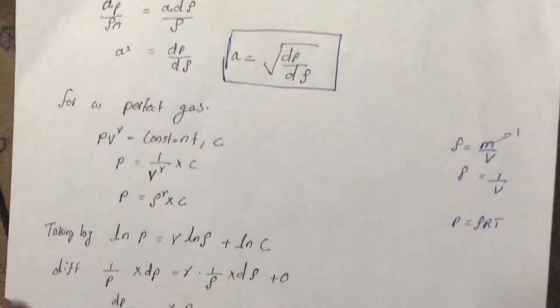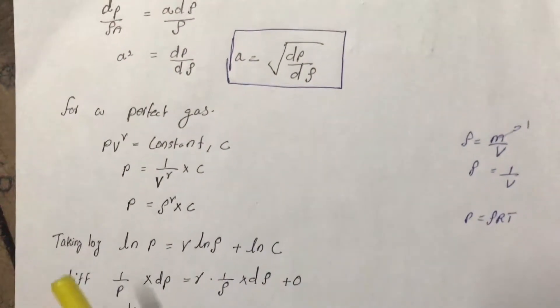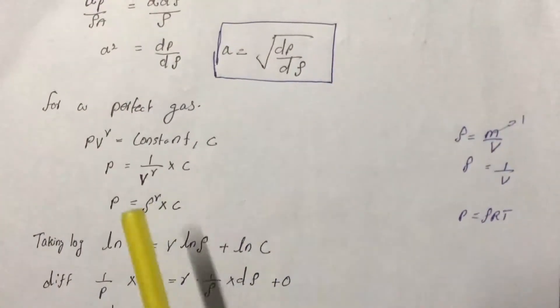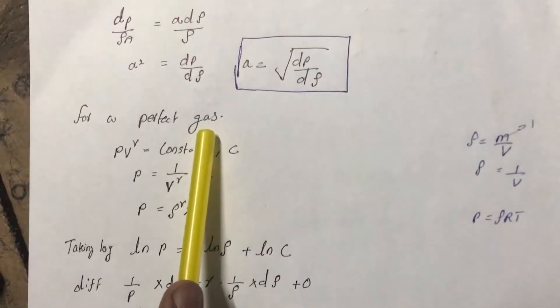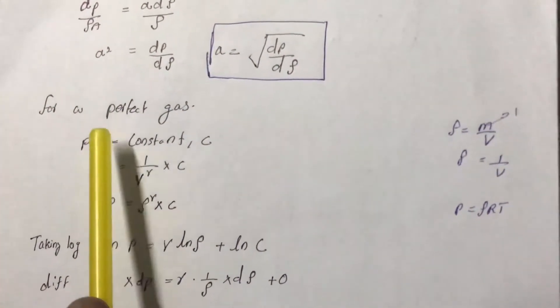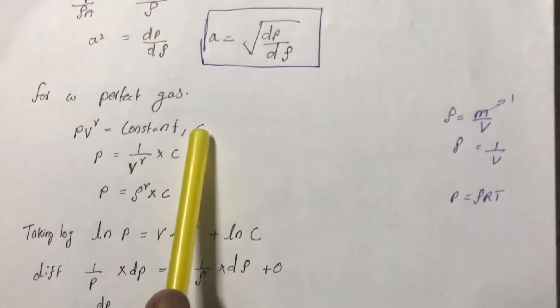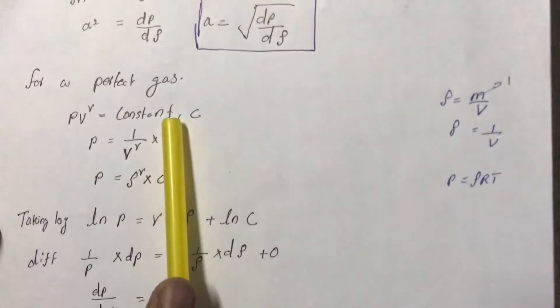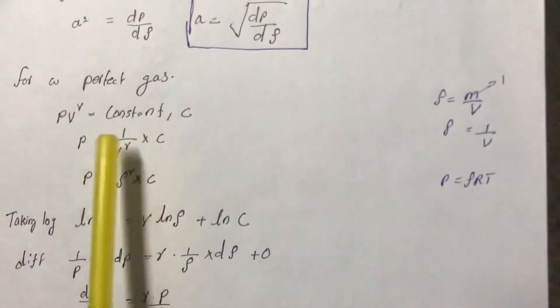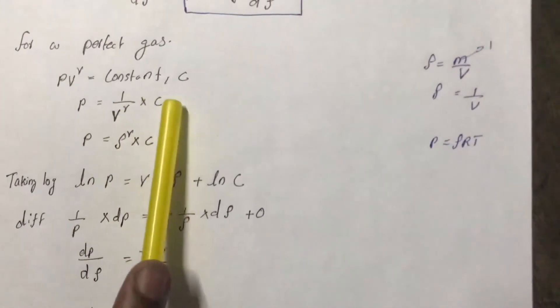Now this process, the process occurring across the pressure wave can be assumed as a reversible adiabatic or isentropic process. Now for a perfect gas, the equation is pv raised to gamma is equal to constant. We all know that for a perfect isentropic flow, this is the basic equation. Rearranging it, p is equal to 1 by v raised to gamma into constant.